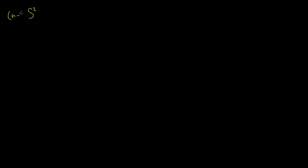We introduced in a previous video that when we take the random variable s squared, representing the distribution of sample variances, we multiply it by n minus 1, where n is the sample size, and divide this by sigma squared, which is the true value of the population variance. We said that this is going to be distributed as a chi-square distribution with n minus 1 degrees of freedom, where a chi-square distribution with n minus 1 degrees of freedom is the sum of n minus 1 squares of standard normal distributions.